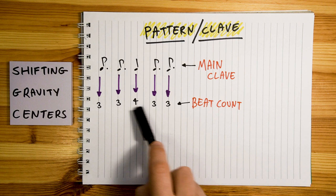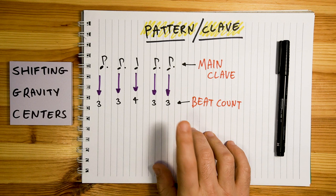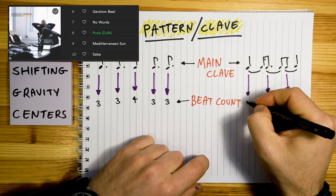And this not-as-common pattern, for example, can look like this. Check out Avishai Cohen's song Punk DJN, by the way, for this one. It's fast and hard to catch, but it uses this clave.